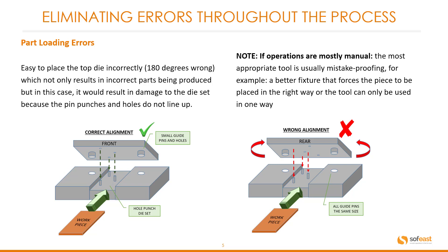For example, a better fixture that forces the piece to be placed in the right way, or the tool can only be used in one way. On the left here, we can see the correct orientation of this top die set. However, on the right, the top die is in the 180 degree wrong position. You can see that the holes and the die pins do not line up — this will cause damage to this die set.